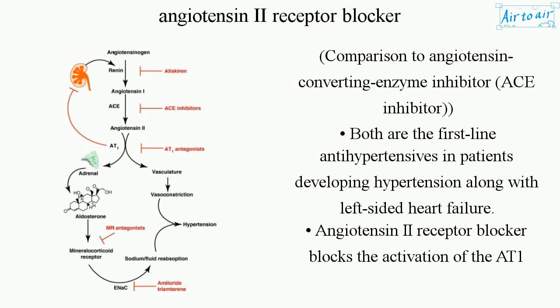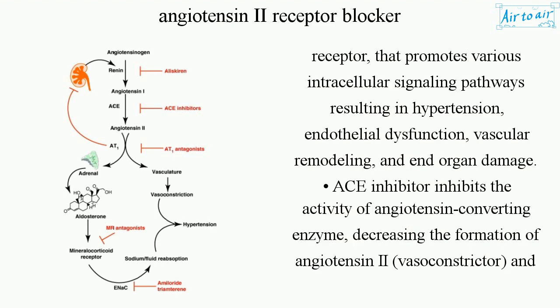Comparison to angiotensin converting enzyme inhibitor (ACE inhibitor): both are the first-line antihypertensives in patients developing hypertension along with left-sided heart failure. Angiotensin II receptor blocker blocks the activation of the AT1 receptor, that promotes various intracellular signaling pathways resulting in hypertension, endothelial dysfunction, vascular remodeling, and end organ damage.